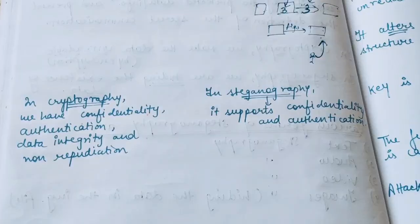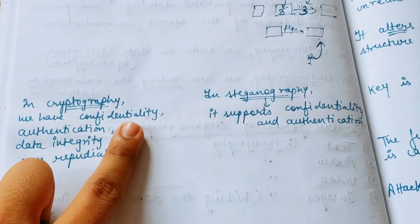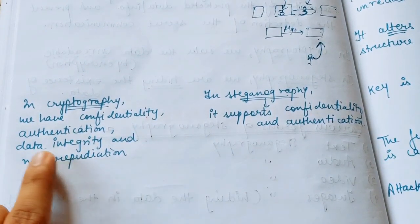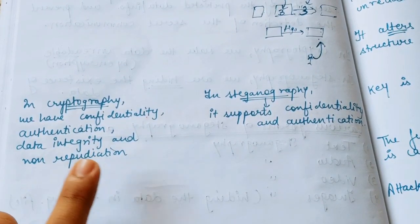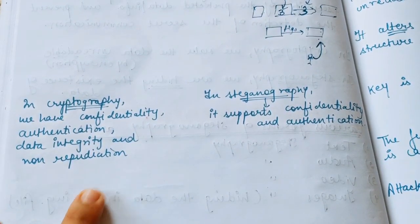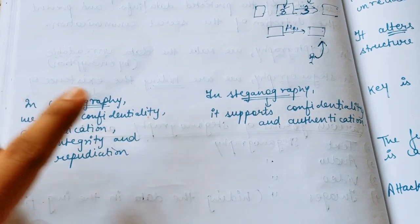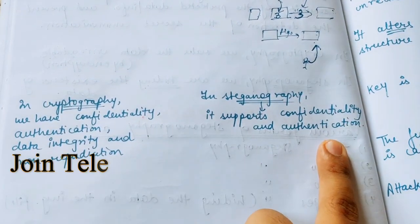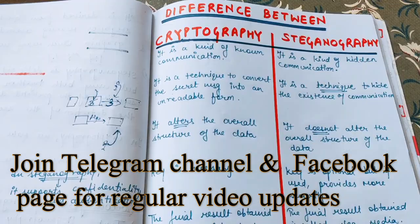Steganography is a less popular approach whereas cryptography is a more popular approach. In cryptography, we have confidentiality, authentication, data integrity, and non-repudiation. Whereas in steganography, only confidentiality and authentication are achieved.